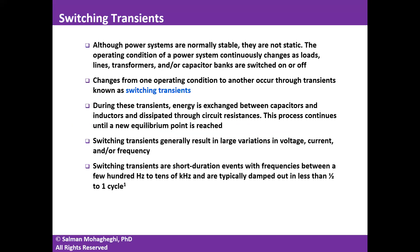In general, power systems are stable. However, they are not static, meaning that as things change — for example, loads are switched on and off, lines are switched on and off, or capacitor banks or transformers are brought online or offline — the operating condition of the power system changes.